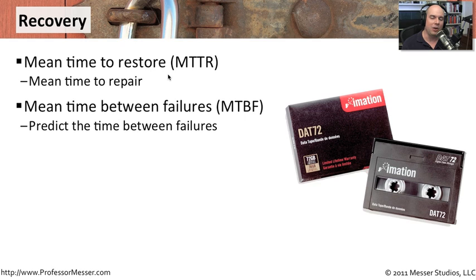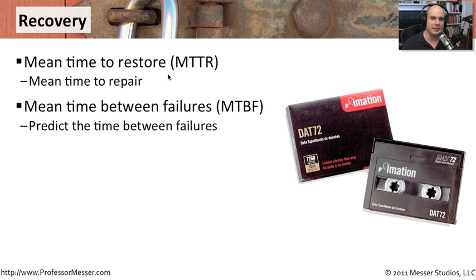If we're looking at how long between failures we might expect, then we're talking about the mean time between failures. This is very often a prediction. Sometimes failures are completely random, but sometimes we can count on certain types of hardware to always have a certain life expectancy. We may expect certain systems to go down once every three years, and we may want to apply that into our mean time between failures calculation.